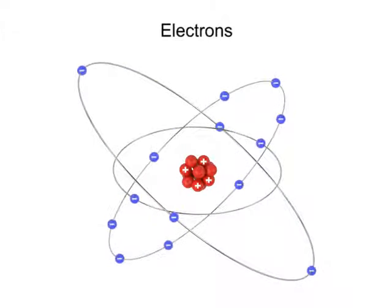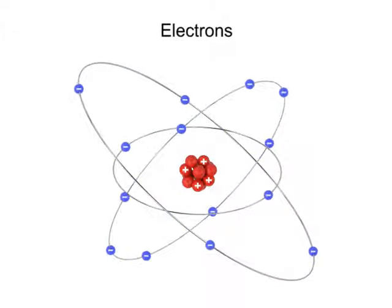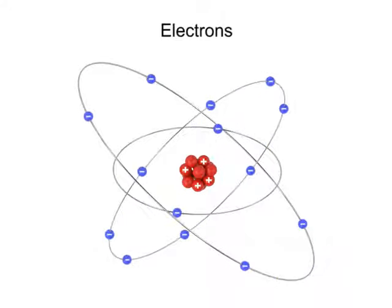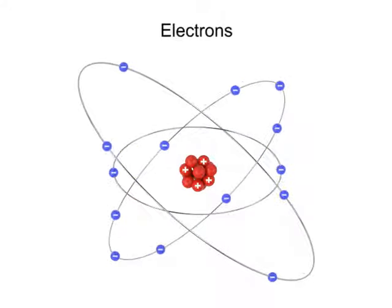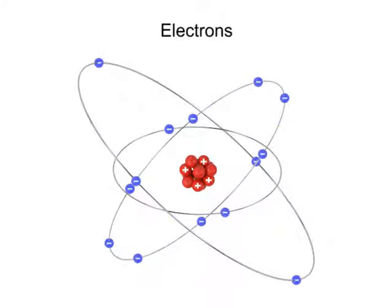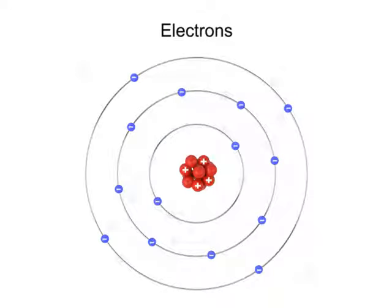Electrons move around a nucleus of an atom in concentric orbits. These orbits or shells represent different energy states that electrons can exhibit. The farther an electron is from the nucleus, the greater its potential energy.